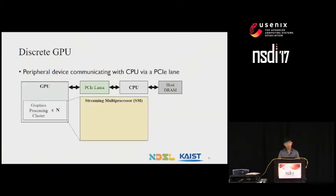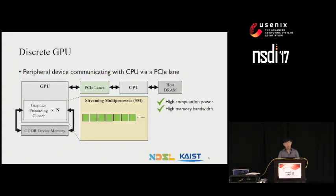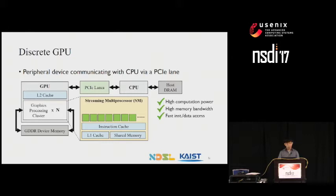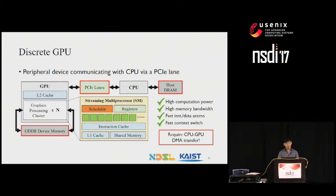Discrete GPU has a number of supports for high-performance packet processing. First, it has high computation power with thousands of cores. It also has an independent high-bandwidth GDDR memory, a shared cache for fast instruction and data access, and a hardware scheduler with many registers to support quick context switches. Unfortunately, as CPU and discrete GPU maintain separate memory devices, data sharing requires a DMA transfer between DRAM and GDDR memory, which will later show as a potential bottleneck point.